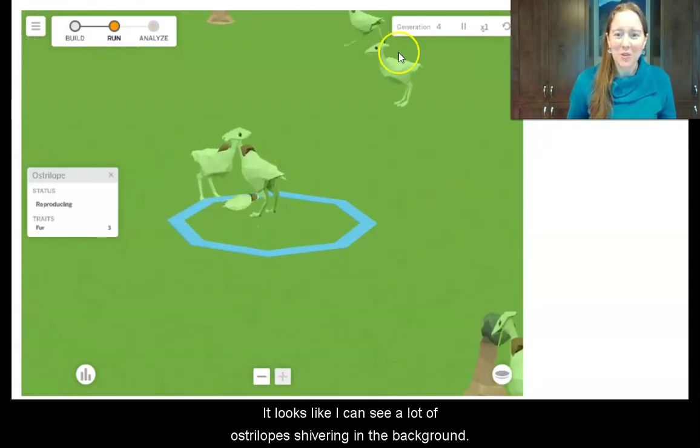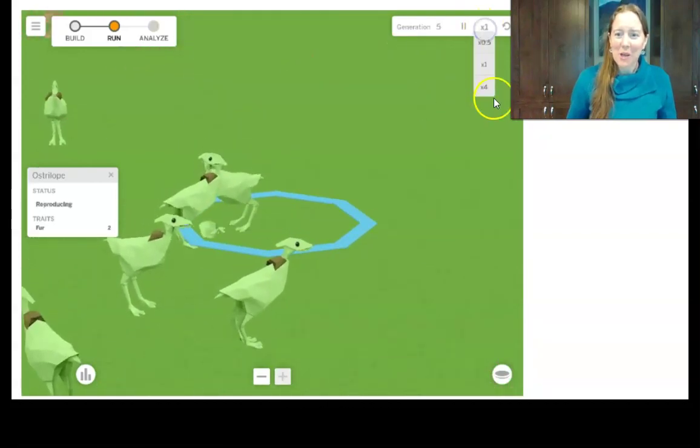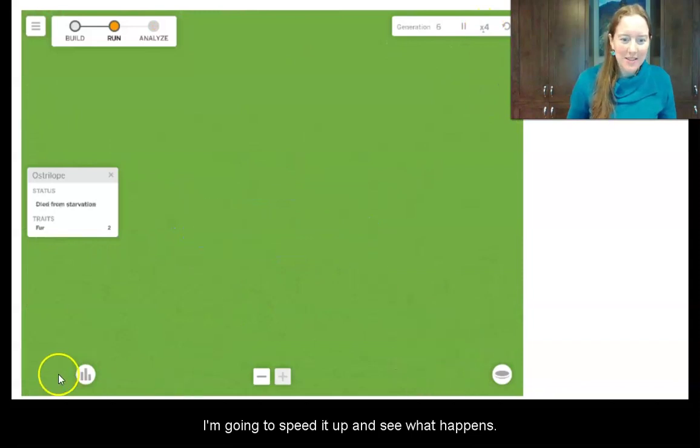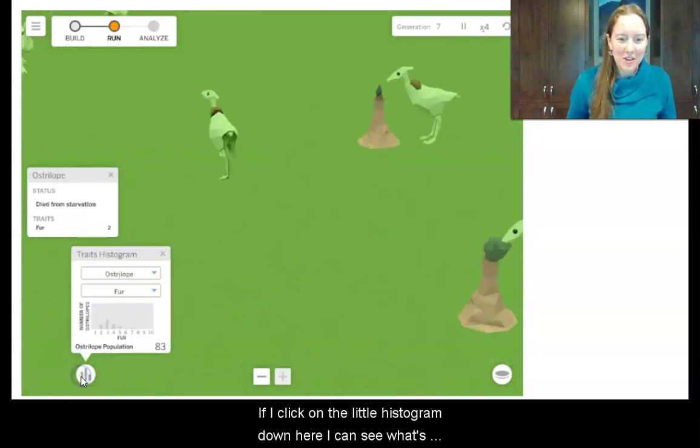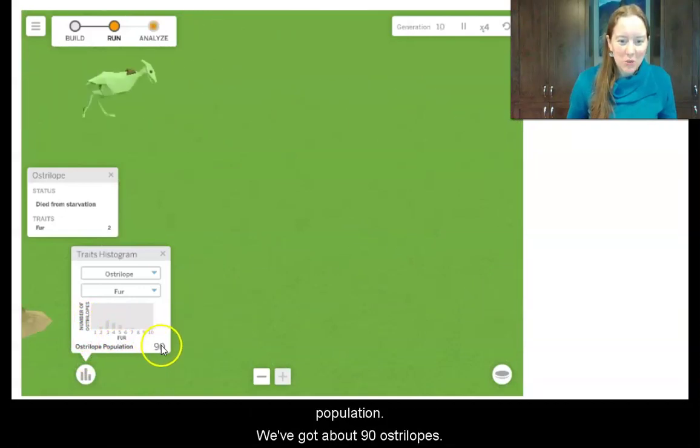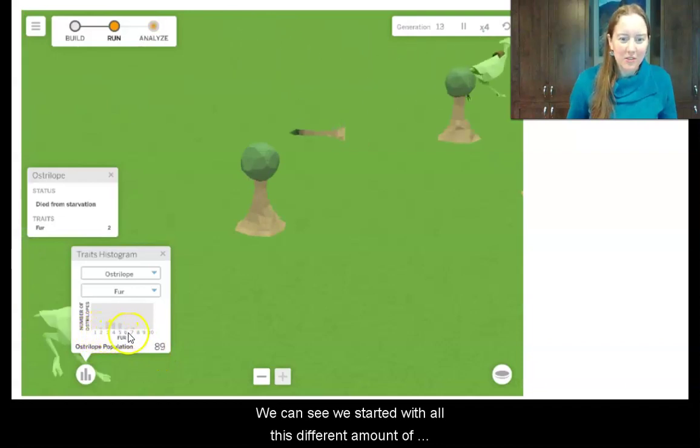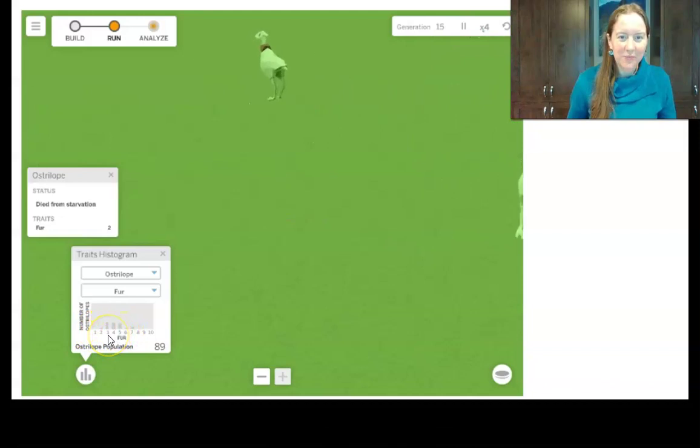Okay, so it looks like I can see a lot of Australopes shivering in the background here. I'm going to speed it up and see what happens. If I click on the little histogram down here, I can see what's happening to the amount of fur in our Australopes population. So we've got about 90 Australopes. We can see, right, we started with all this different amount of fur, all this variation. And we can see how it changes over time.